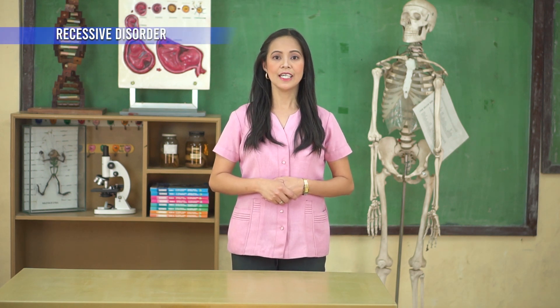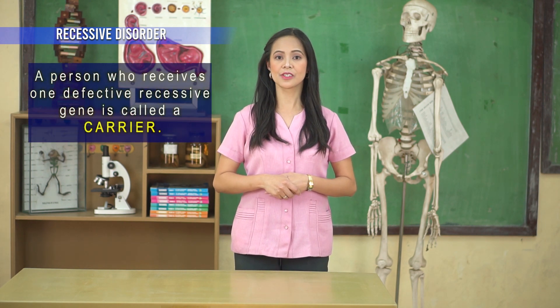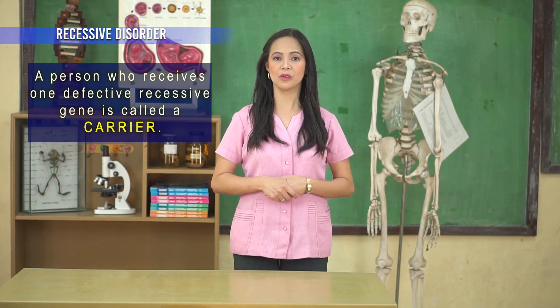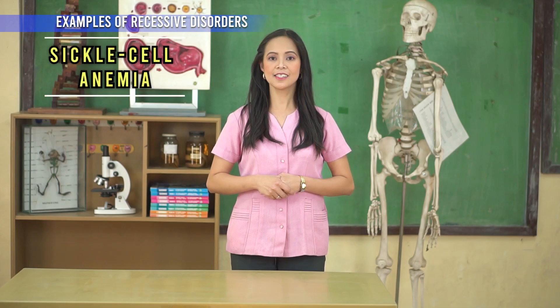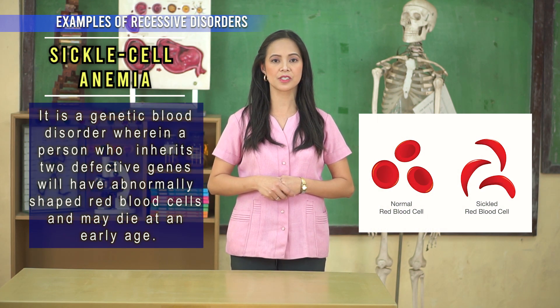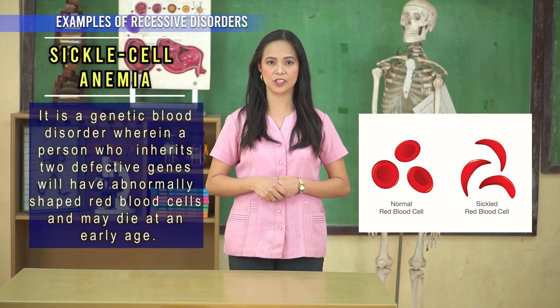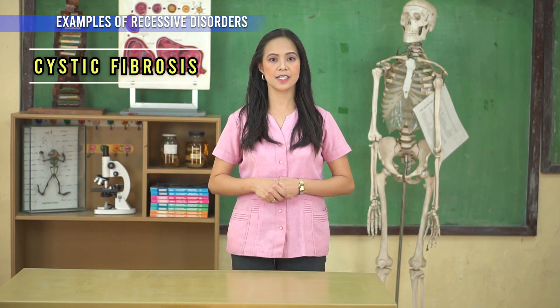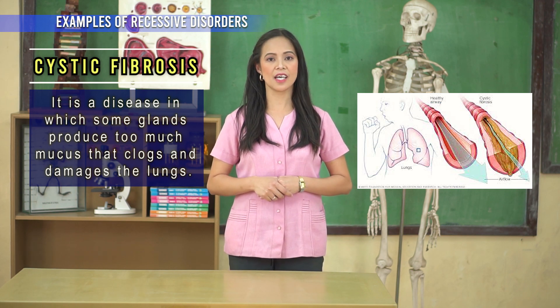Harmful mutations may cause genetic disorders. The first kind is the recessive disorder — it happens when a child receives two defective genes from each parent. A person who receives one defective recessive gene is called a carrier. Some examples of recessive disorders are sickle cell anemia, a genetic blood disorder where a person who inherits two defective genes will have abnormally shaped red blood cells and may die at an early age, and cystic fibrosis, a disease in which some glands produce too much mucus that clogs and damages the lungs.